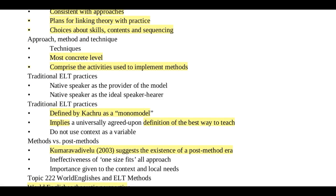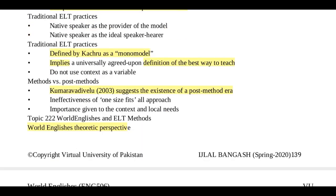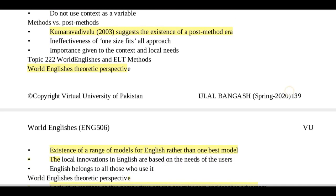Here we highlight the monomodel, defined by Kachru — just one model for teaching English. This implies a universally agreed-upon definition of the best way to teach, without using context as a variable. In 2003, it was suggested that a post-method era exists, rejecting one-size-fits-all approaches as ineffective, with importance given to context and local needs.